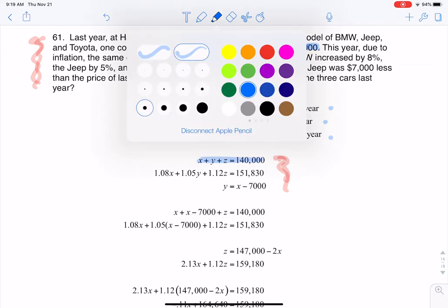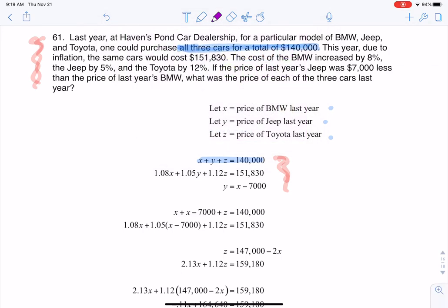Let me change to purple. The next sentence says this year, due to inflation, the same cars would cost $151,830. So I'm going to have another cost equation. Something's going to total out to $151,830 as opposed to $140,000.